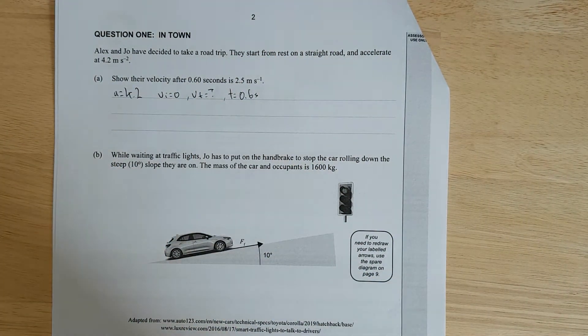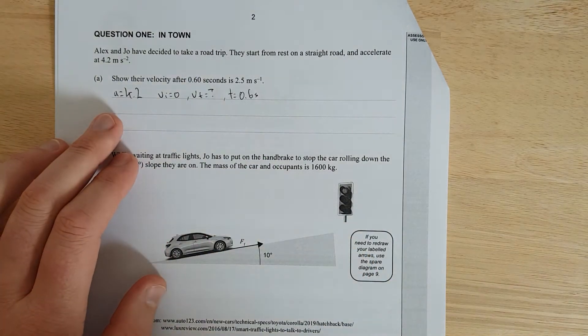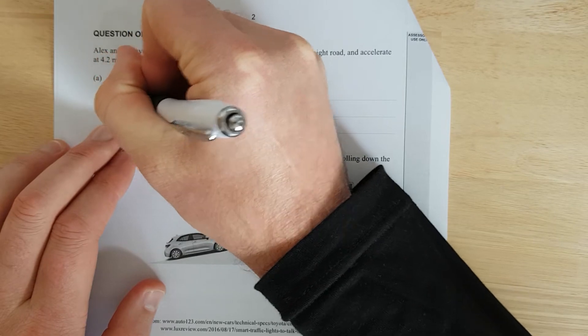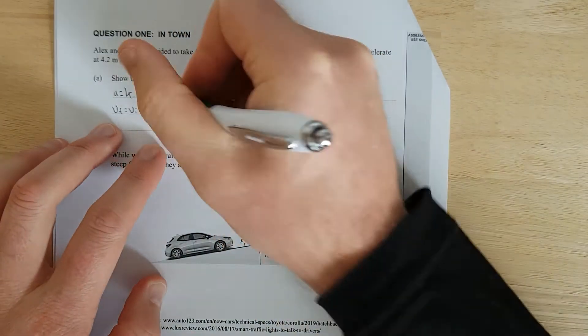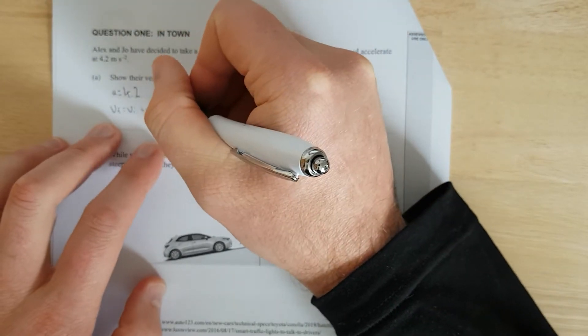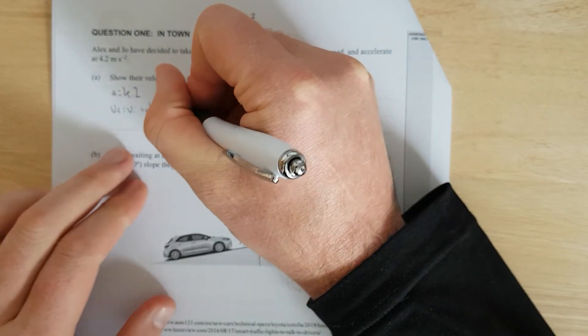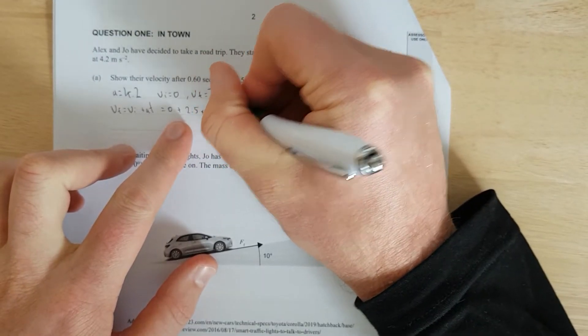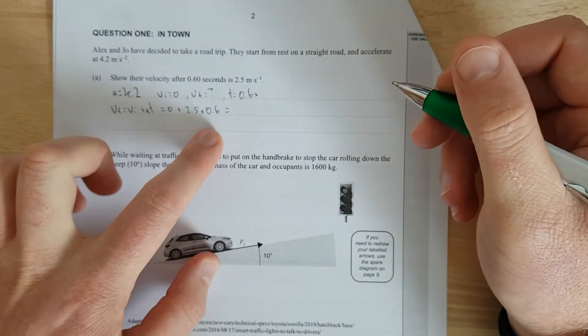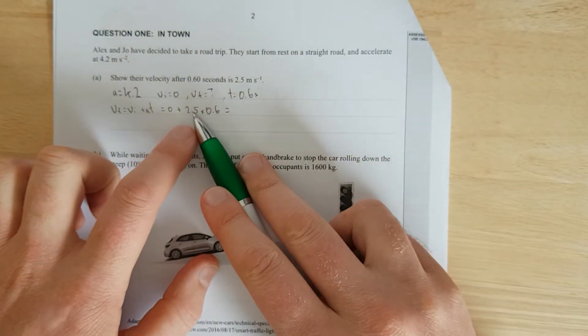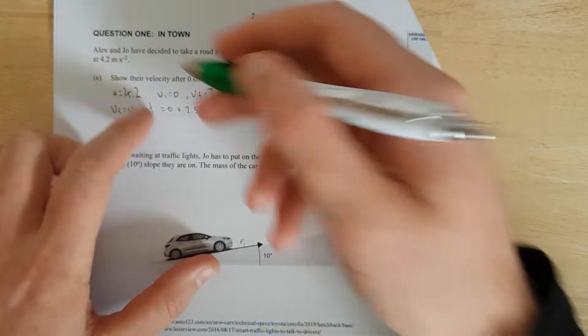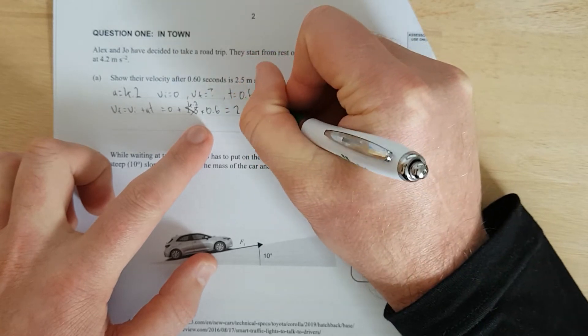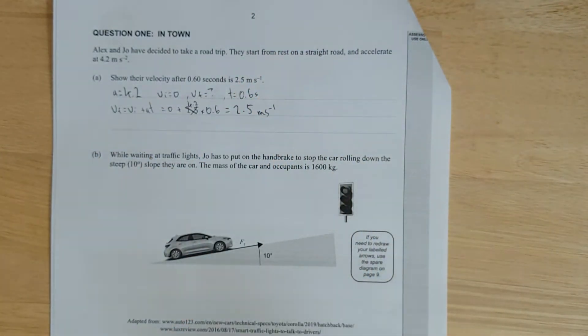The only formula that has all those four values is VF equals VI plus AT. And then all we need to do now is substitute in. So we're going to have that is equal to 0 plus 4.2 times 0.6, and that equals 2.5 meters per second. There we go, that's all you need to do.